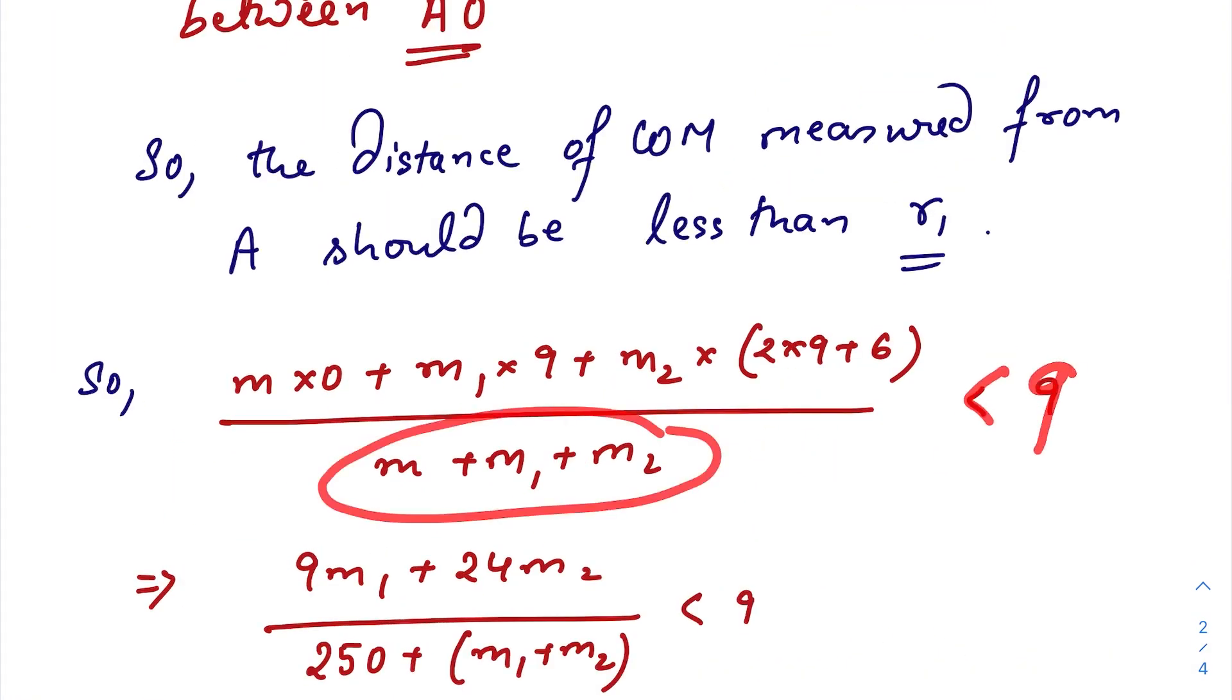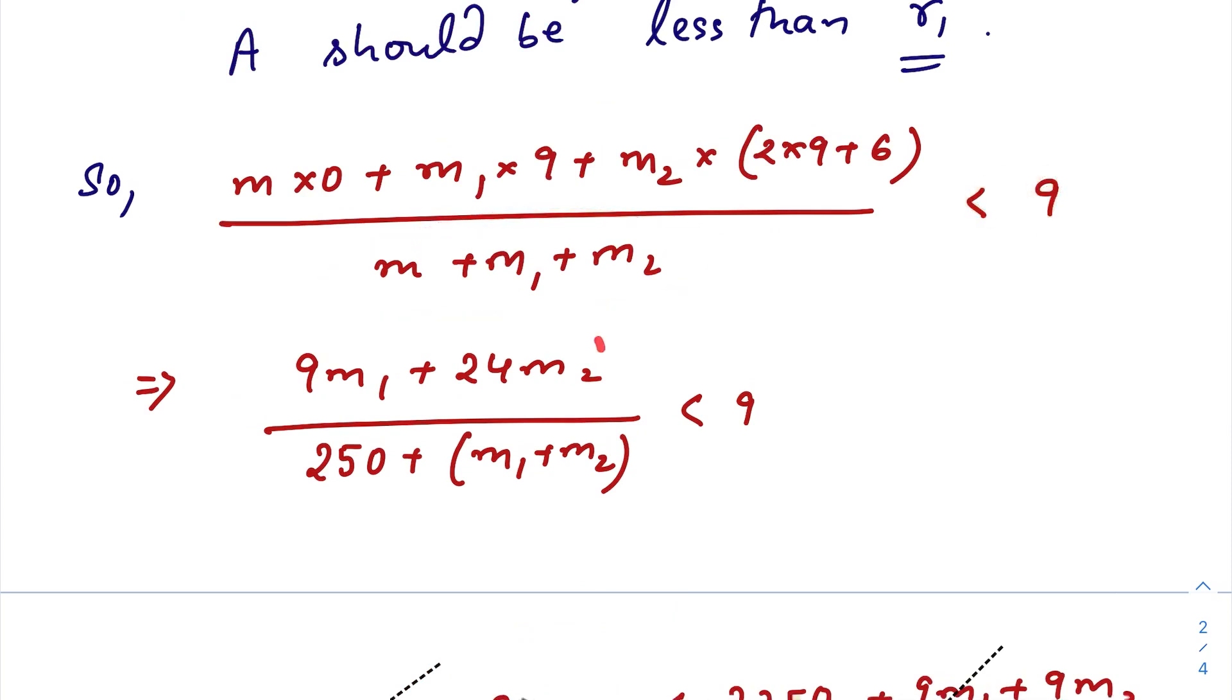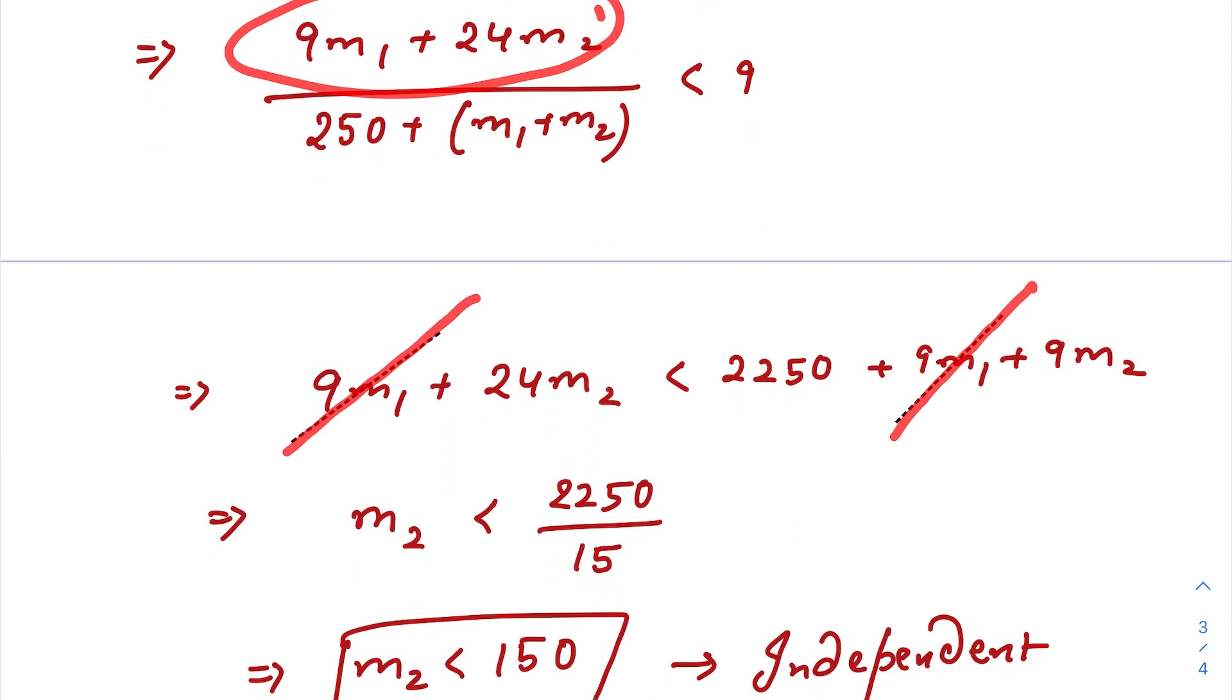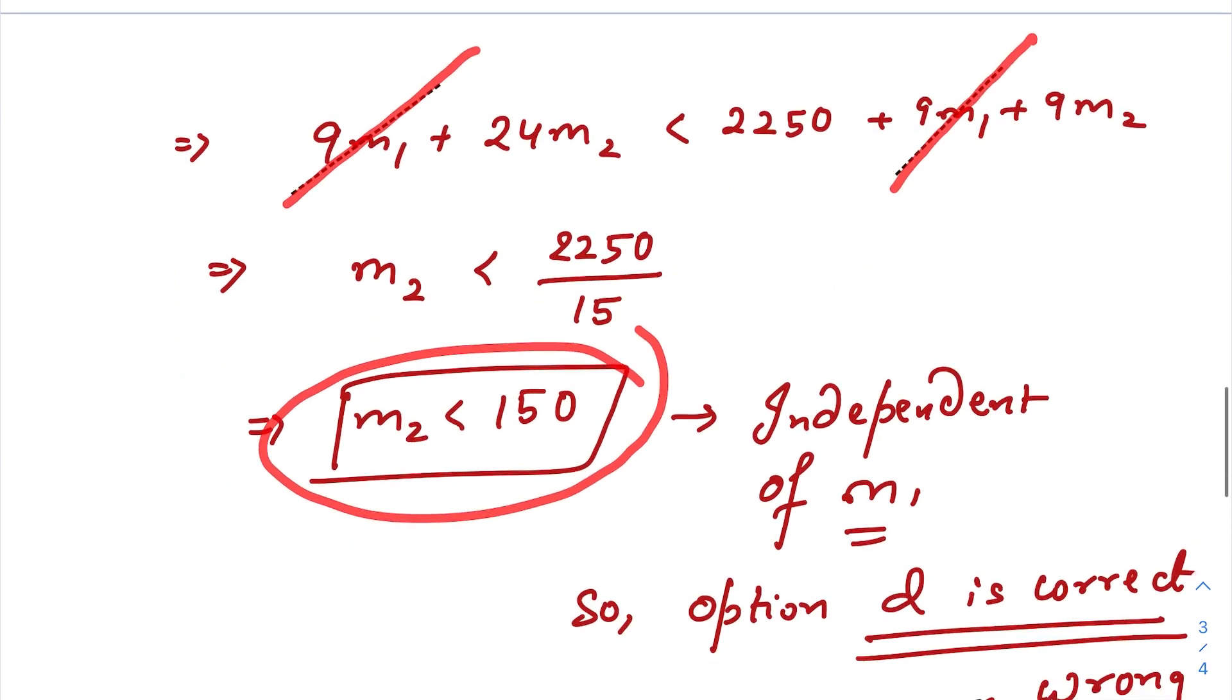Now just equate this one. As you can see, m1 gets cancelled out and we get the final condition that is m2 should be less than 150 grams.